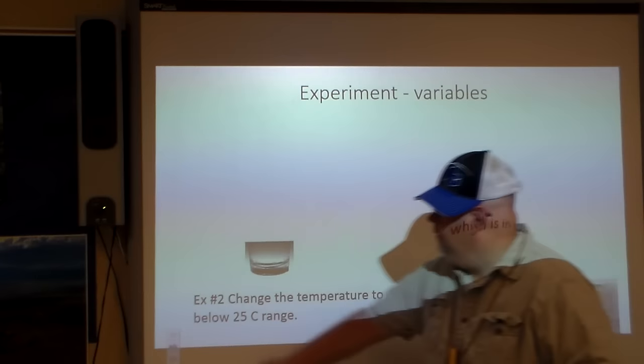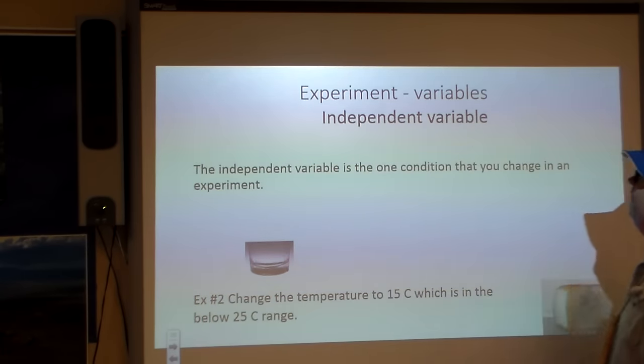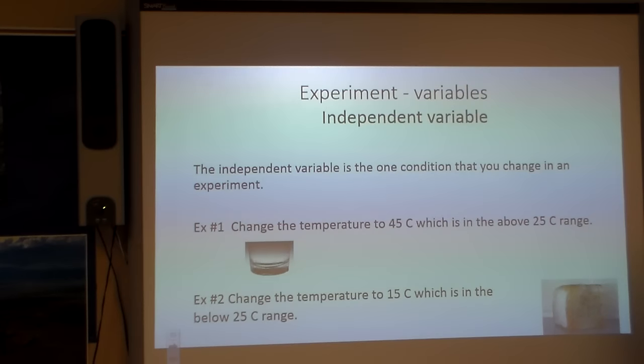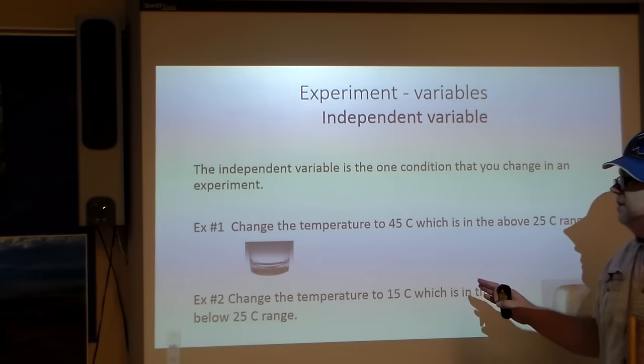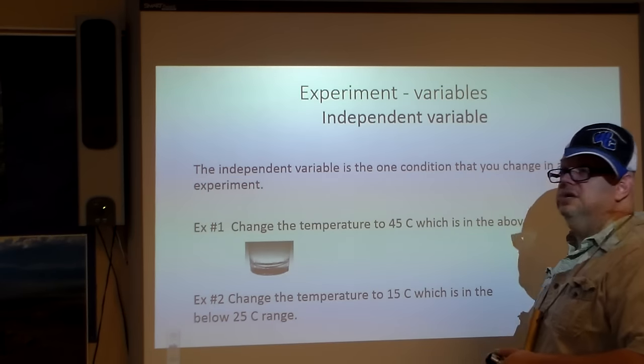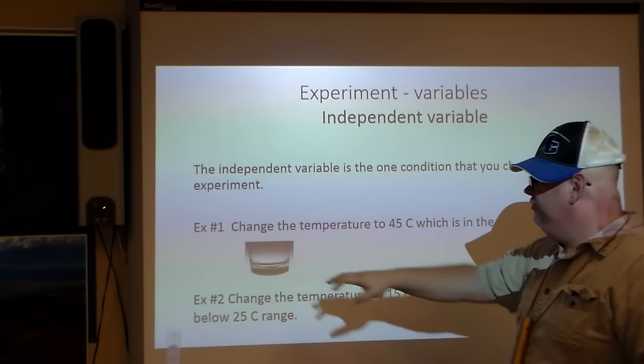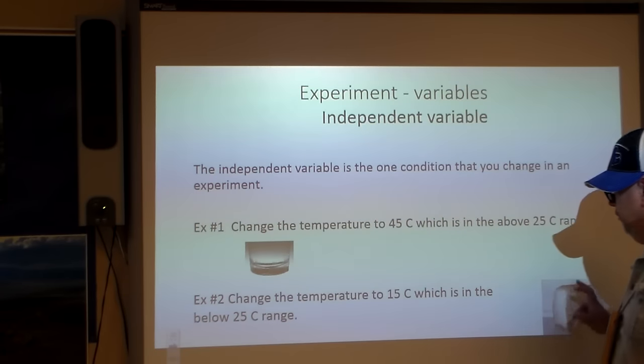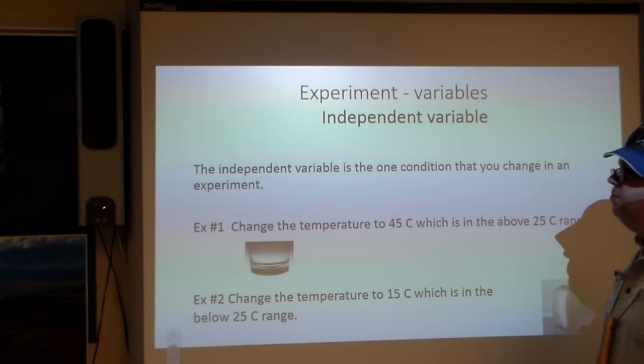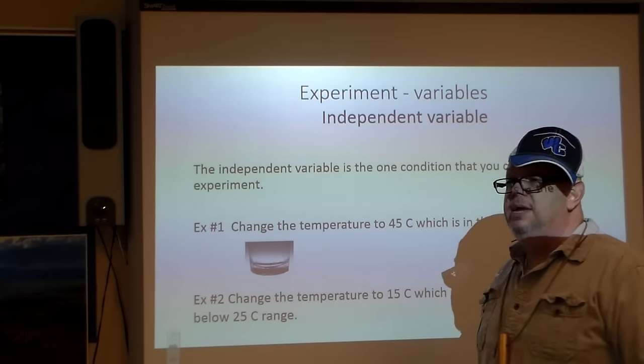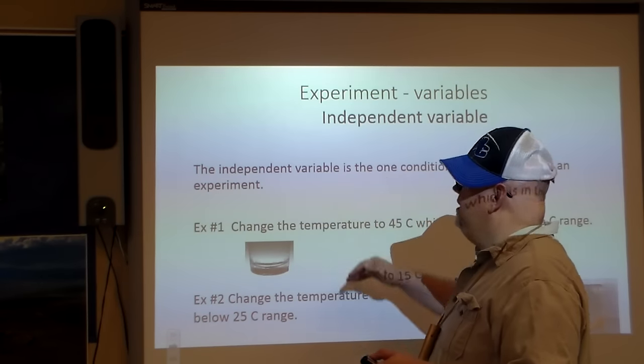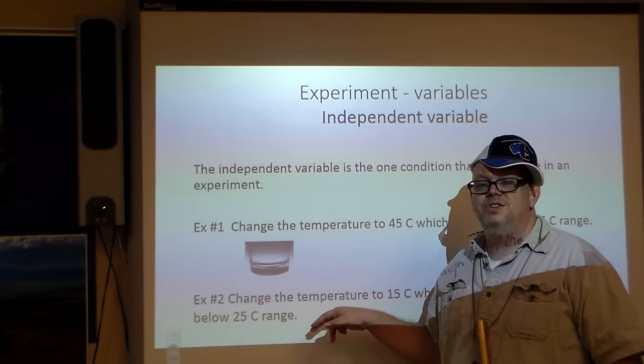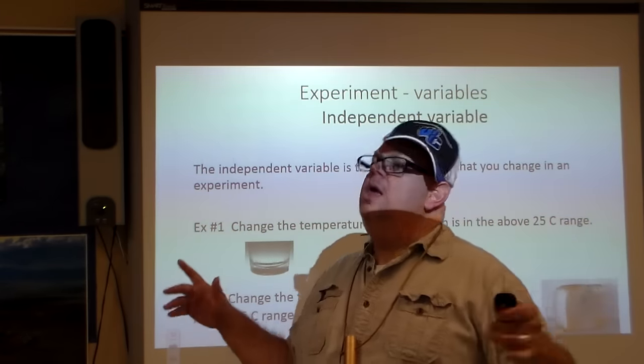Moving on. The independent variable is the one condition we can actually change in the experiment. For example, we can change the temperature to 45 Celsius, which is in the above 25 degrees Celsius range. We can alter the temperature. We'll see how much condensation that we're going to make with it. Example number two, change the temperature to 15 Celsius for our bread, which is below the 25 degrees Celsius range. So that gives us an idea of what's going to be going on with our hypothesis. We're in the process of testing. We need to run more than one experiment. You can't run just one experiment and that's it. It doesn't work that way.